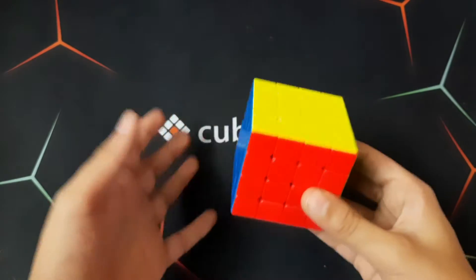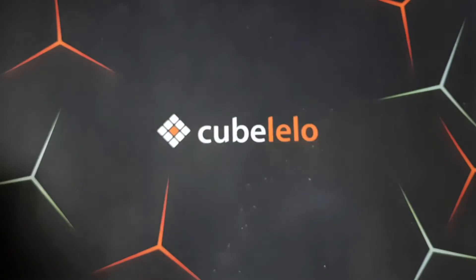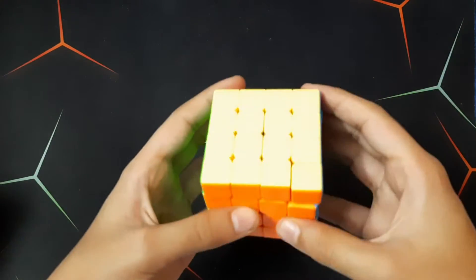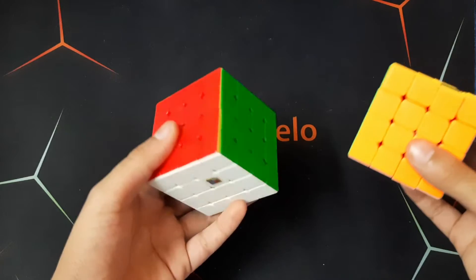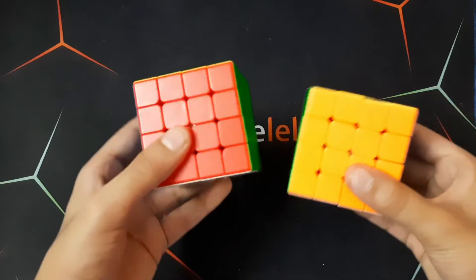So this is the magnetized version of the regular Melong 4x4. Here I have the cube - this is the regular Melong 4x4 and this is the magnetized Melong 4x4.